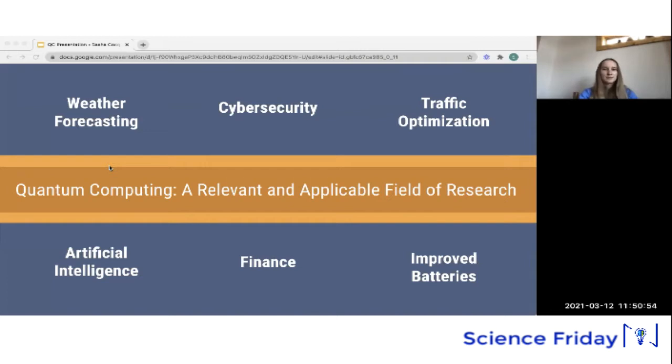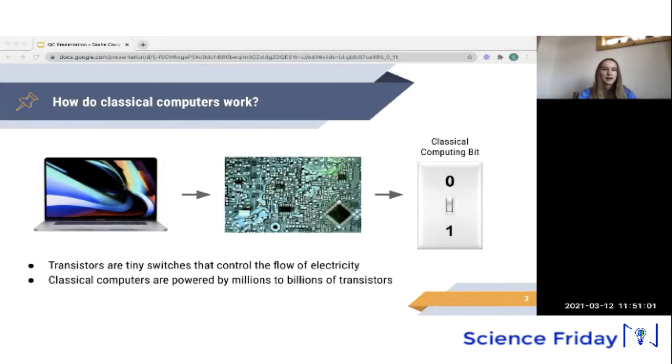But what actually is quantum computing? Well, to understand quantum computing, we first need to understand classical computing. Classical computers, like the MacBook Pros we use, are very intricate systems. They're powered by a computer chip, which contains millions to billions of transistors. For example, the newest Apple M1 chip has 16 billion transistors. You can think of these transistors as tiny switches that control the flow of electricity, which is what most fundamentally is used to perform computation. And transistors can store one bit of information. They can be in a state of either zero or off or one or on.